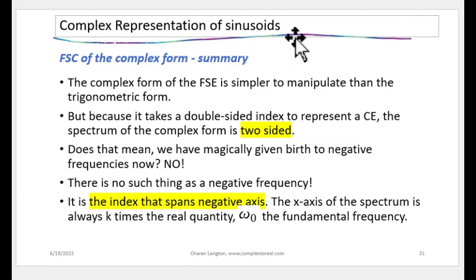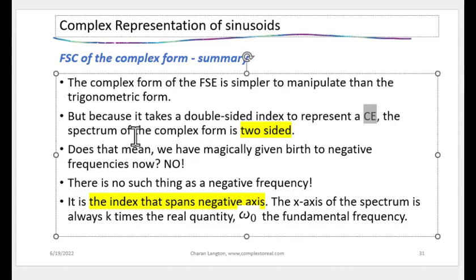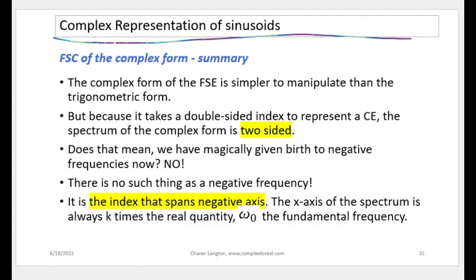The summary of the complex form: the complex Fourier series equation is simpler to manipulate than the trigonometric form. Because it takes a double-sided index to represent a complex exponential, the spectrum is two-sided. This does not mean negative frequencies exist — there is no such thing as negative frequency. The spectrum is two-sided because of the indexing of the coefficients, not because frequency itself is negative.